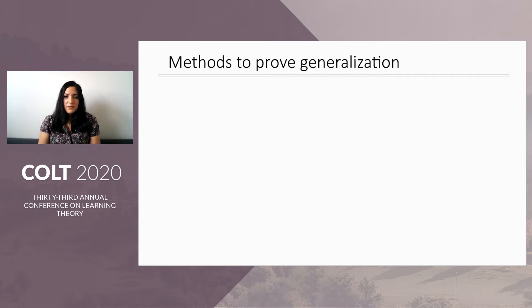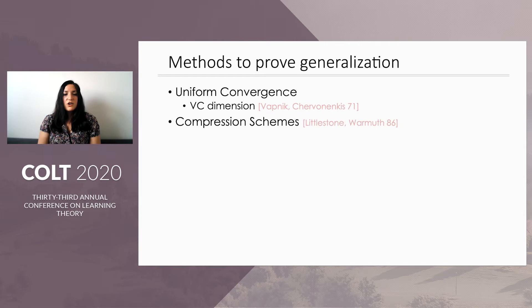There have been many great methods proposed to prove generalization. Uniform convergence ensures strong generalization guarantees and refers to combinatorial properties of the class of hypotheses. Perhaps the most famous measure of combinatorial structure of the hypothesis class is the VC dimension of the class. If our algorithm is a compression scheme, so if it essentially chooses only a small fraction of its input to learn from, then we can also show that it generalizes well.